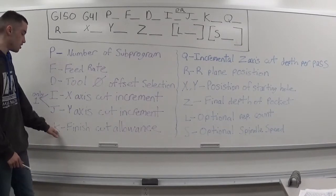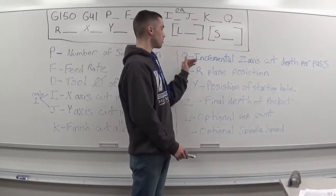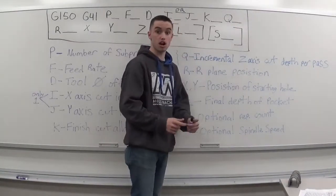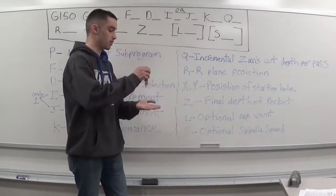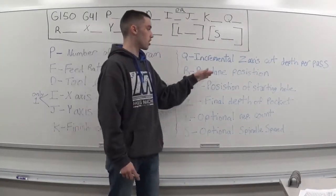Then you have your K, which is your finish cut allowance. Then you have your Q, which is your incremental Z axis cut depth or pass. So how deep will be going every cut.